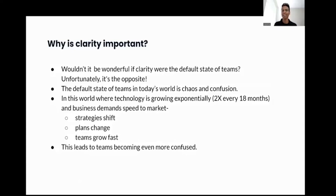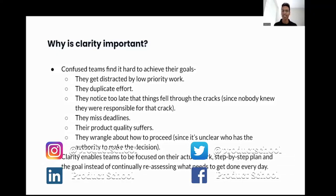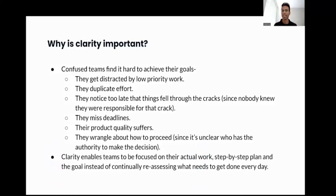Wouldn't it be wonderful if clarity were the default state of teams? Unfortunately, it's the opposite. The default state of teams in today's world is chaos and confusion. Where technology is growing exponentially and business demands speed to market, strategies shift, plans usually change, and teams grow really fast. This leads to teams becoming even more confused. Confused teams usually find it hard to achieve their goal — they are distracted by low priority work, duplicate efforts, notice too late that things fell through cracks, miss deadlines, or their product quality suffers. Clarity enables teams to be focused on their actual work, the step-by-step plan, and the goal instead of continuously reassessing what needs to be done next.